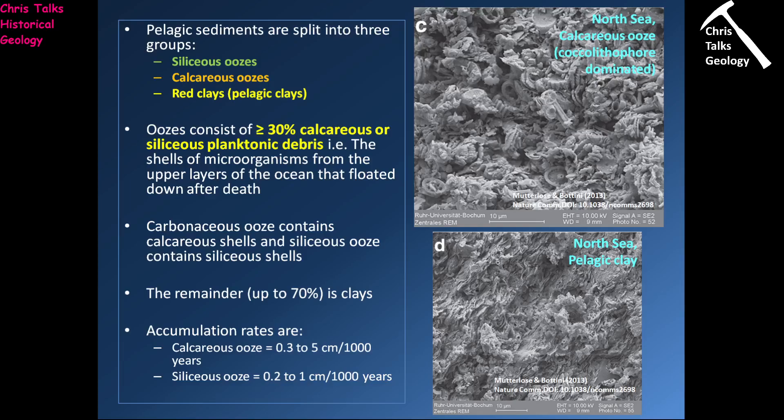Pelagic sediments are split into three main groups: siliceous oozes, calcareous oozes, and what are referred to as the red clays, also called pelagic clays. An ooze consists of greater than or equal to 30% calcareous or siliceous planktonic debris. There are little photosynthesizing organisms and also little zooplankton — predatory plankton — floating around at the top of the water column, near the ocean surface.